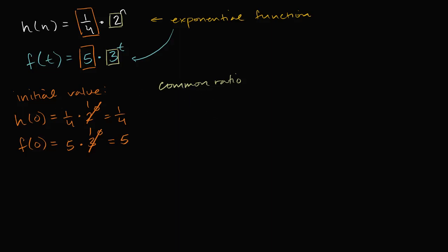h of zero is equal to, we already established, 1/4. Now, what is h of one going to be equal to? It's going to be 1/4 times 2 to the first power, so it's going to be 1/4 times 2. What is h of two going to be equal to? Well, it's going to be 1/4 times 2 squared, so it's going to be times 2 times 2.